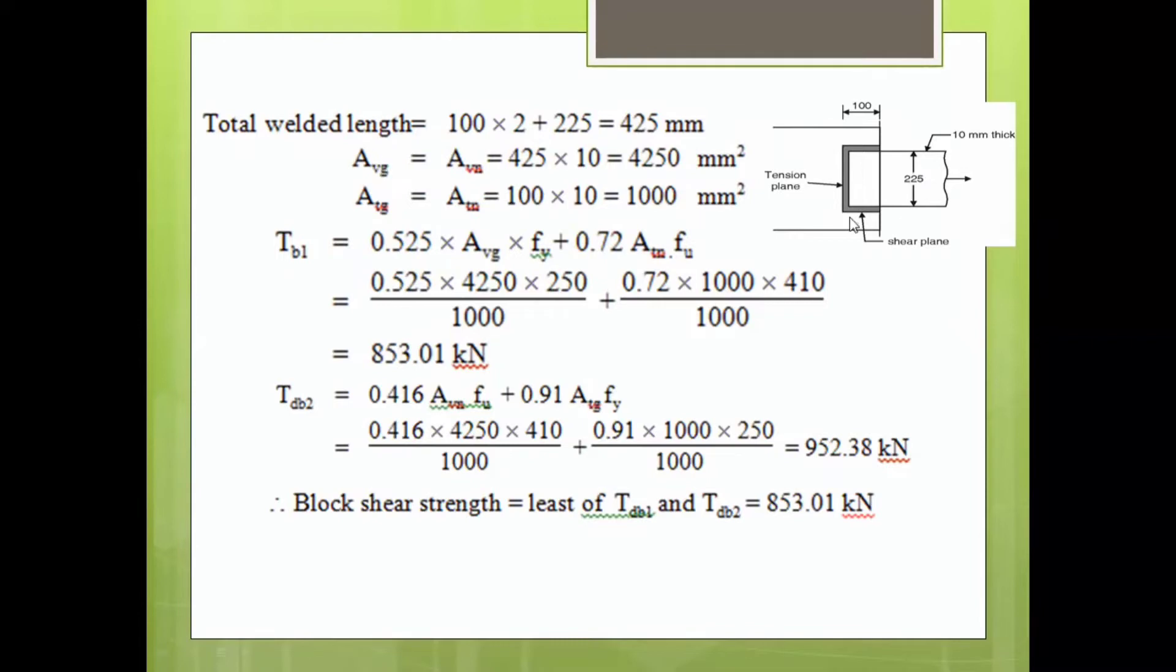Next, gross area in shear and net area in shear will be the same for welded connections. It equals 425, the total weld length, into the thickness of the section, 10 mm. So it comes to 4250 mm squared. Then gross area in tension and net area in tension will be the same: 100 into 10, which is 1000 mm squared.